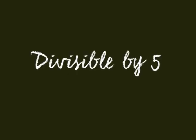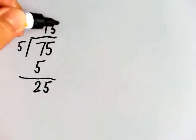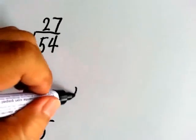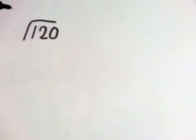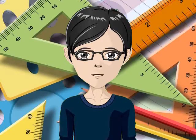Linawin pa natin. For example, divisible by 5 means you can divide a certain number by 5 without a remainder. Like 75 for example — 75 is divisible by 5. Divisible by 2 means you can divide a certain number by 2 without a remainder, like 54. Divisible by 10 means you can divide by 10 without a remainder, like 120. 120 is divisible by 10. Yun ang ibig sabihin ng divisible.